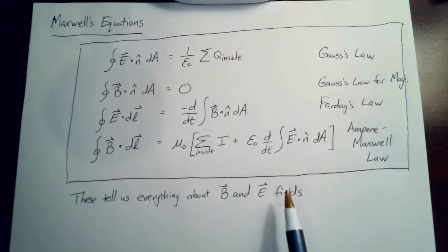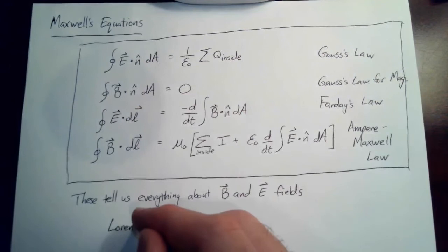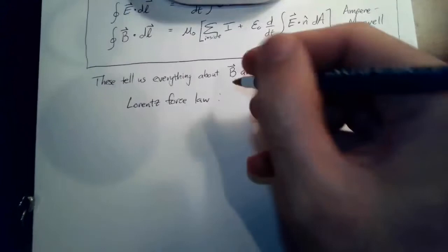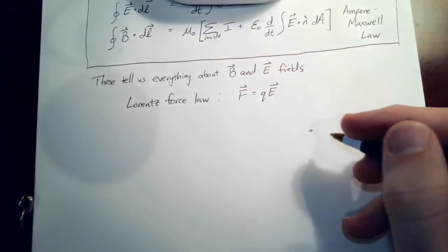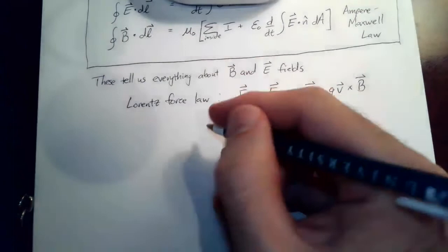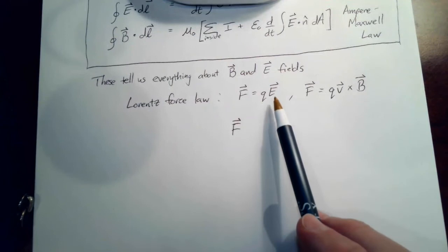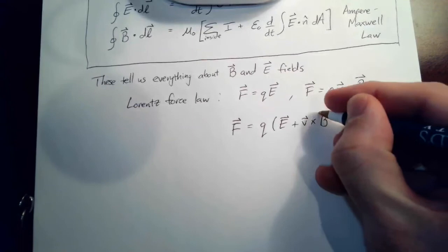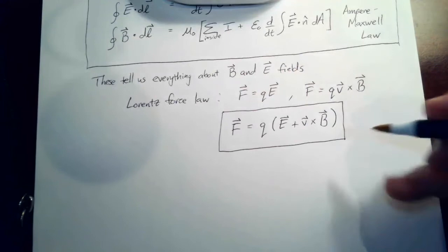There's one more equation we should add, which is: how do these fields affect charges? For that we have the Lorentz force law, a combination of the two force laws we've already seen. For electric force, F = qE; for magnetic force, F = qv × B. Adding these together and factoring out q, the total force is F = q(E + v × B), and that tells us how charges are affected by electric and magnetic fields.